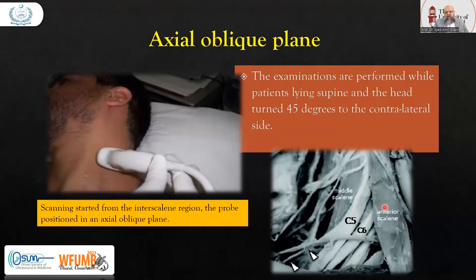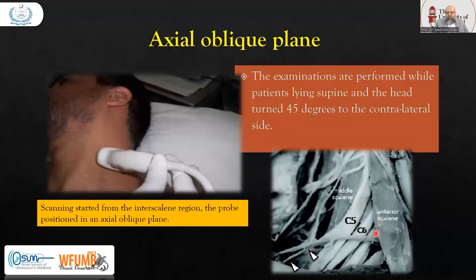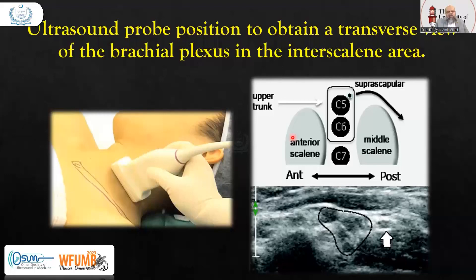You can see the anterior scalene muscle and middle scalene muscle. The transducer is placed about two to three fingers below the chin on the side of the neck. Between the anterior and middle scalene muscles, there are three hypoechoic areas — these are the nerve roots C5, C6, and C7, representing the upper trunk of the brachial plexus in the suprascapular approach. These are the main roots from where we start.